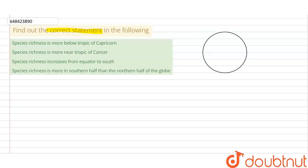We will see how species richness varies across the Earth. Suppose this is the Earth, and this is the equator region. At the equator, the sun's rays fall directly, so sunlight is more intense here. Because of this straight sunlight at the equator, the species richness will always be high at the equator.